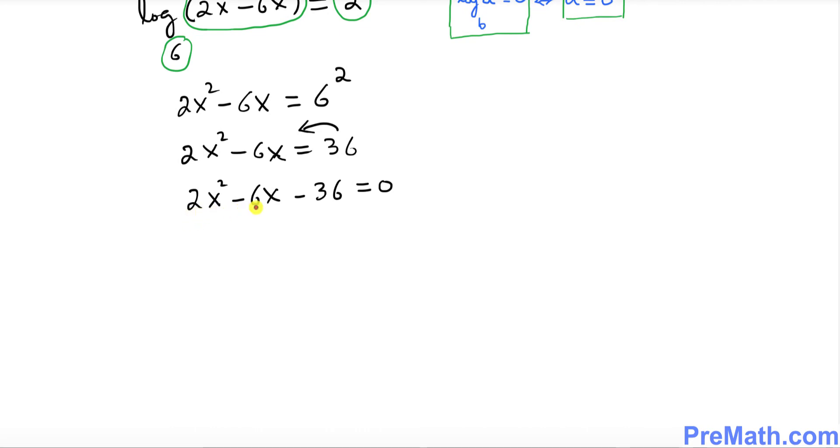Now as you can observe, all these terms are divisible by 2, so I can divide across the board by 2. Do you see that? So this way we're going to simplify. This could be written as x squared minus 3x minus 18 equals to 0.